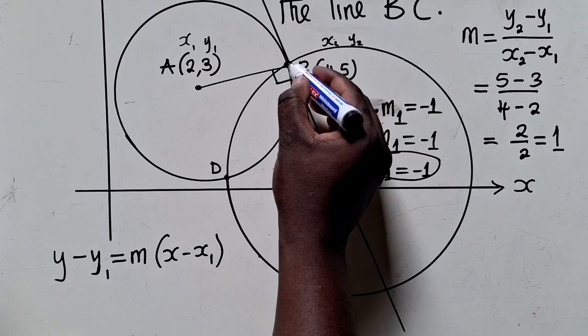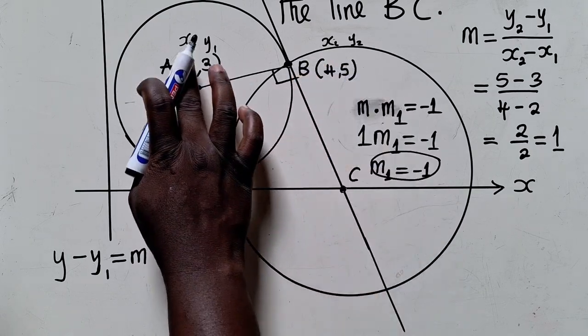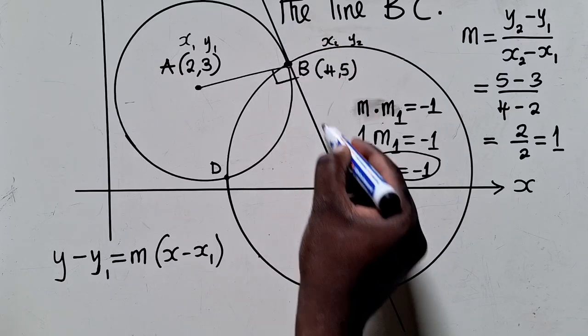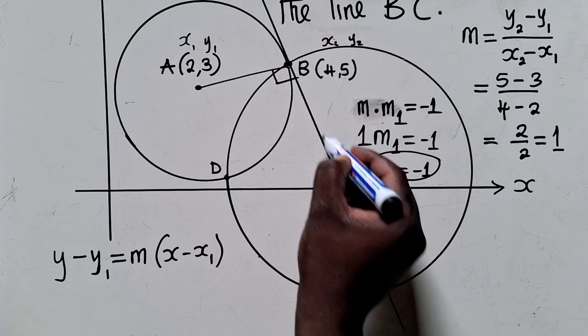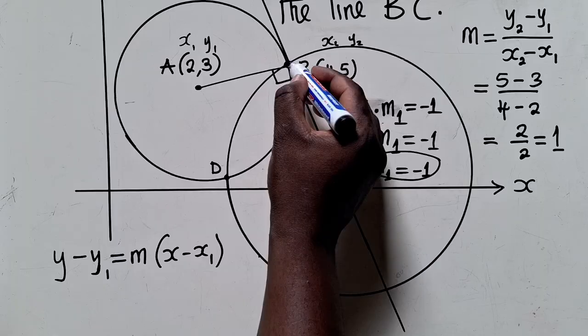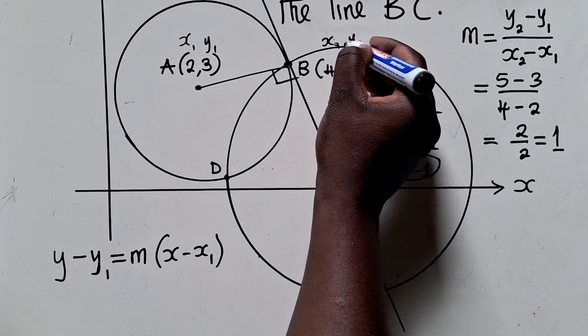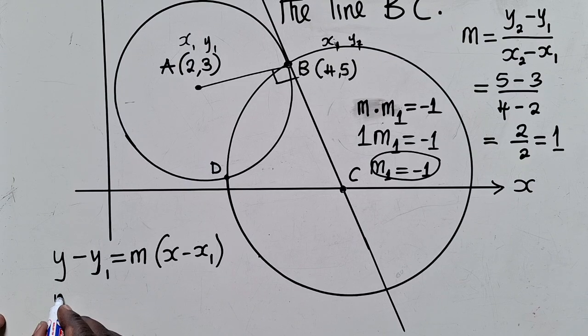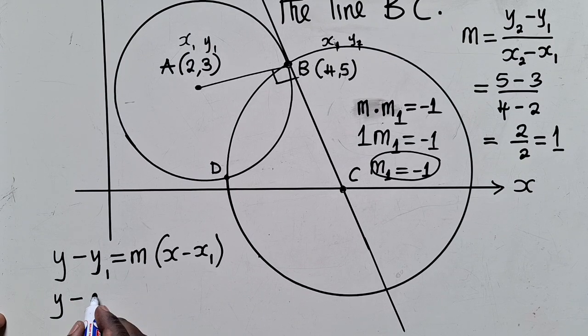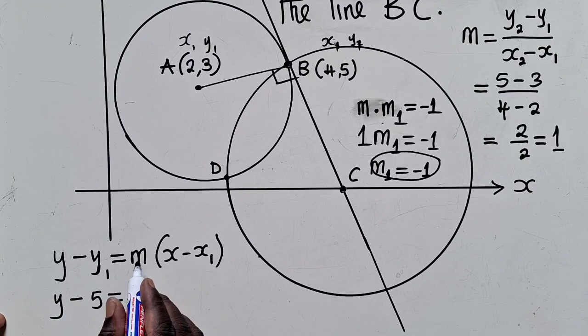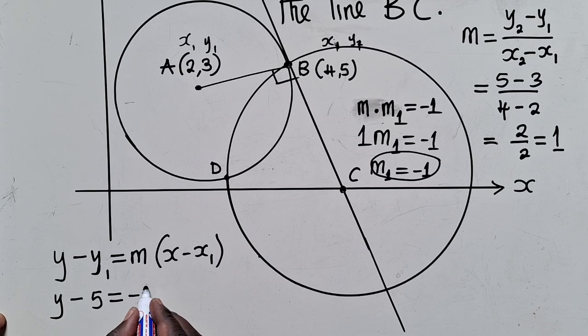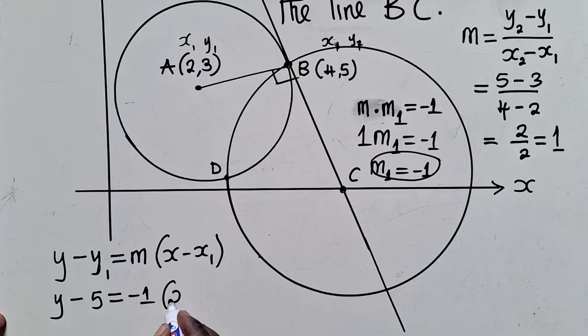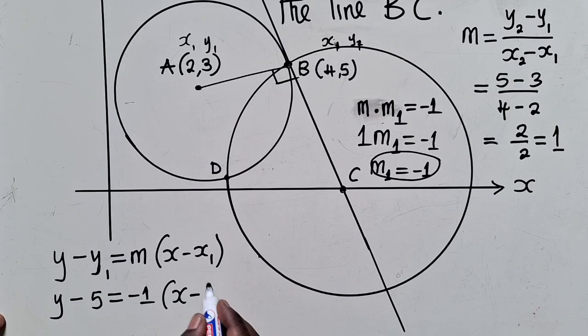This point is the point that we're going to use. We now want to get the point which is involved with this line, the line that we are finding. It's right here. Meaning, this will be our X1 and Y1. So we can substitute here. Y minus Y1 is 5, equal to M, which is negative 1, open bracket, X minus X1 is 4.